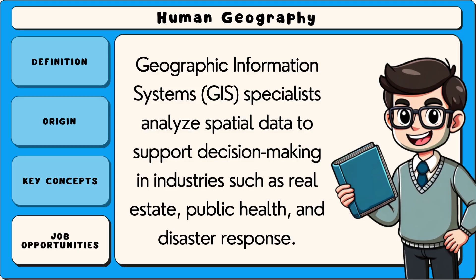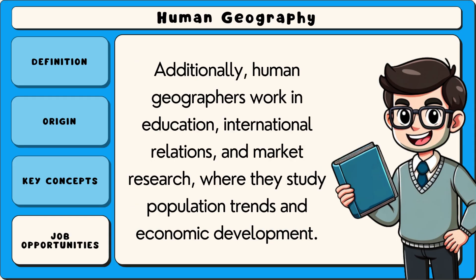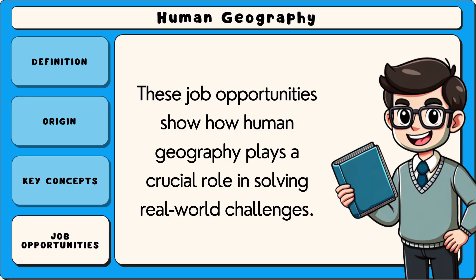Geographic information systems (GIS) specialists analyse spatial data to support decision-making in industries such as real estate, public health and disaster response. Additionally, human geographers work in education, international relations and market research, where they study population trends and economic development. These job opportunities show how human geography plays a crucial role in solving real-world challenges.